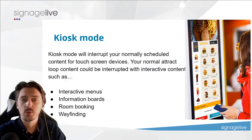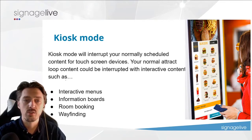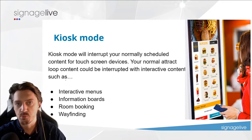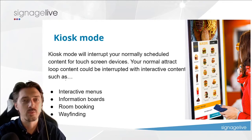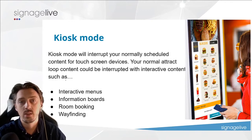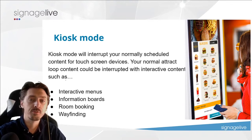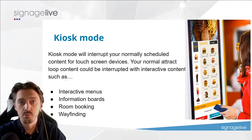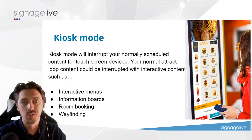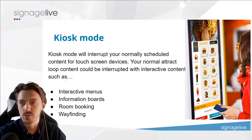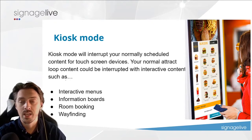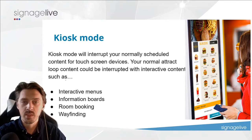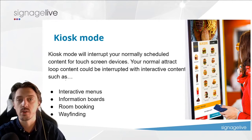Kiosk mode is slightly different again — it's about interrupting the screen specifically for a touch screen interrupt. Kiosk mode allows you to have an attract loop: perhaps a promotional campaign saying 'check out this product' or 'check out our new menu option.' When the user walks up and touches the screen, it replaces that content with whatever else you want to display. These are often interactive menus, information boards, room booking, wayfinding, or HTML5 and .exe applications where the user can filter down into data, select items, enter payment, and complete a transaction.